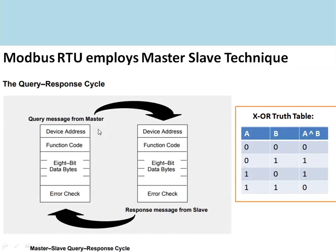This protocol employs a master-slave technique. The master sends the query and the slave responds to that query. The master can be an HMI or SCADA system, and the slave can be a PLC. Whenever the master asks for some data, it sends it in the form of bytes: the device address corresponds to the address of the PLC, the function code indicates whether it is digital input or analog input.